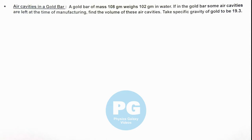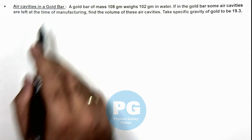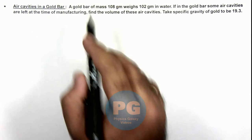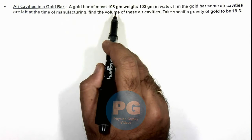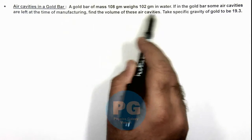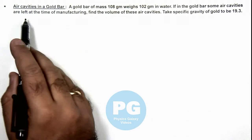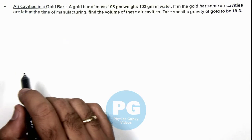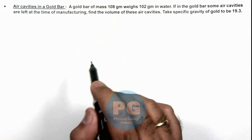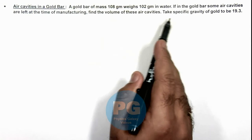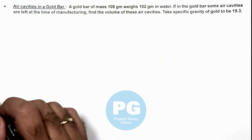In this illustration, we'll analyze air cavities in a gold bar. We are given that a gold bar of mass 108 grams weighs 102 grams in water. If in the gold bar some air cavities are left at the time of manufacturing, we are required to find the volume of these air cavities, given that the specific gravity of gold is 19.3.